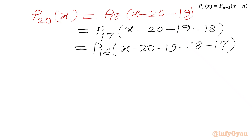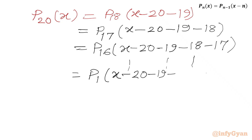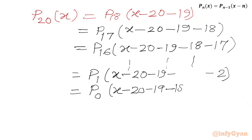In the same way if we continue writing this pattern, we will eventually get down to P₁. P₁ would be expressed as x minus 20 minus 19 minus 18, continuing all the way down to minus 2 minus 1.